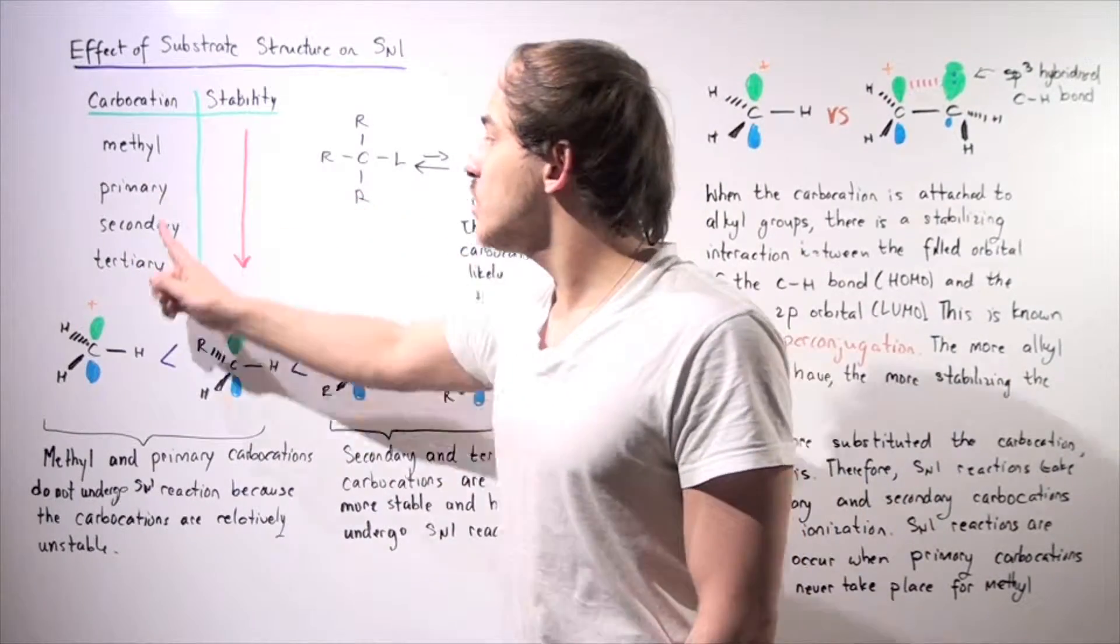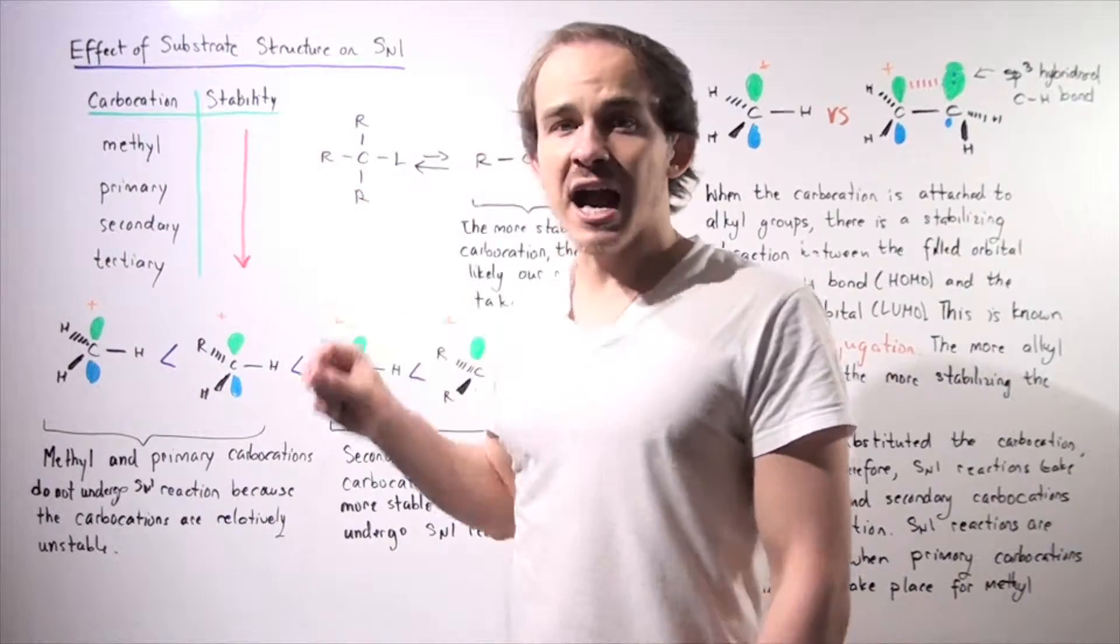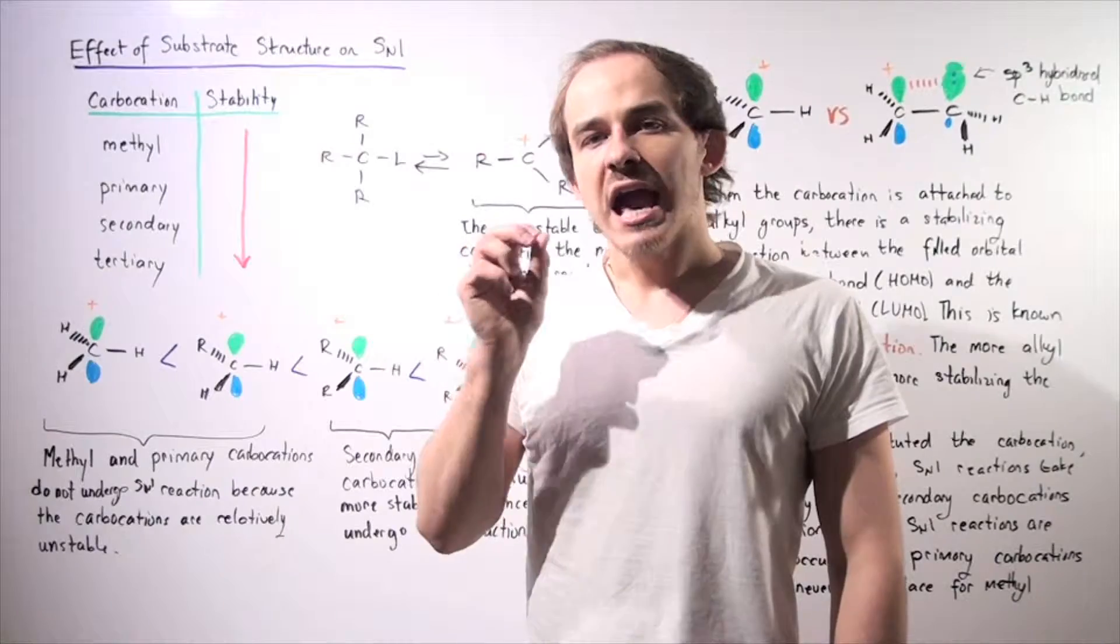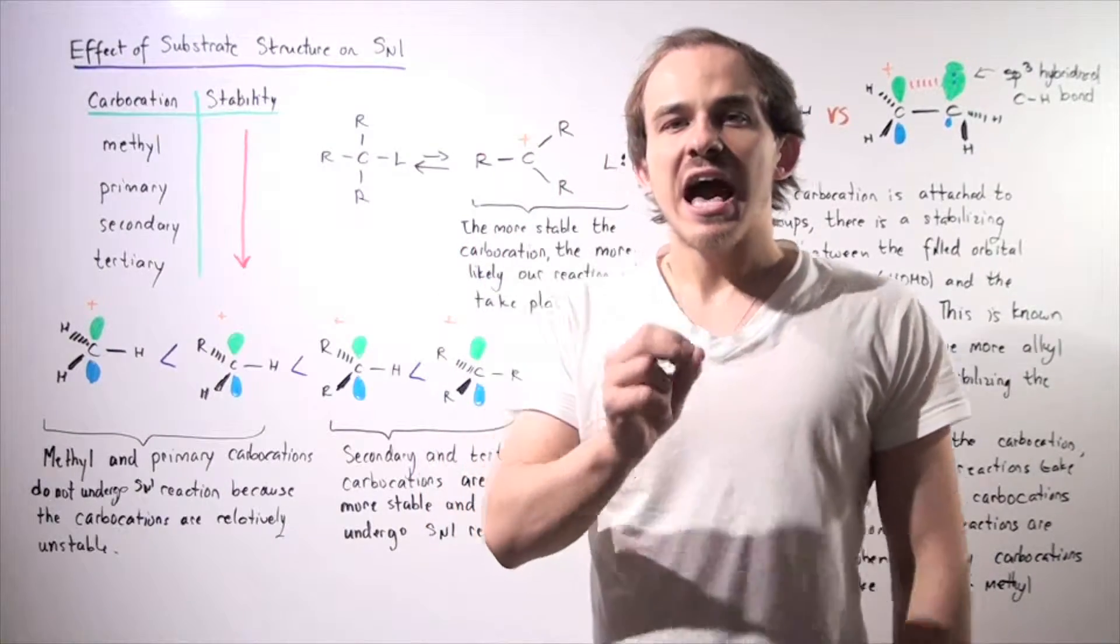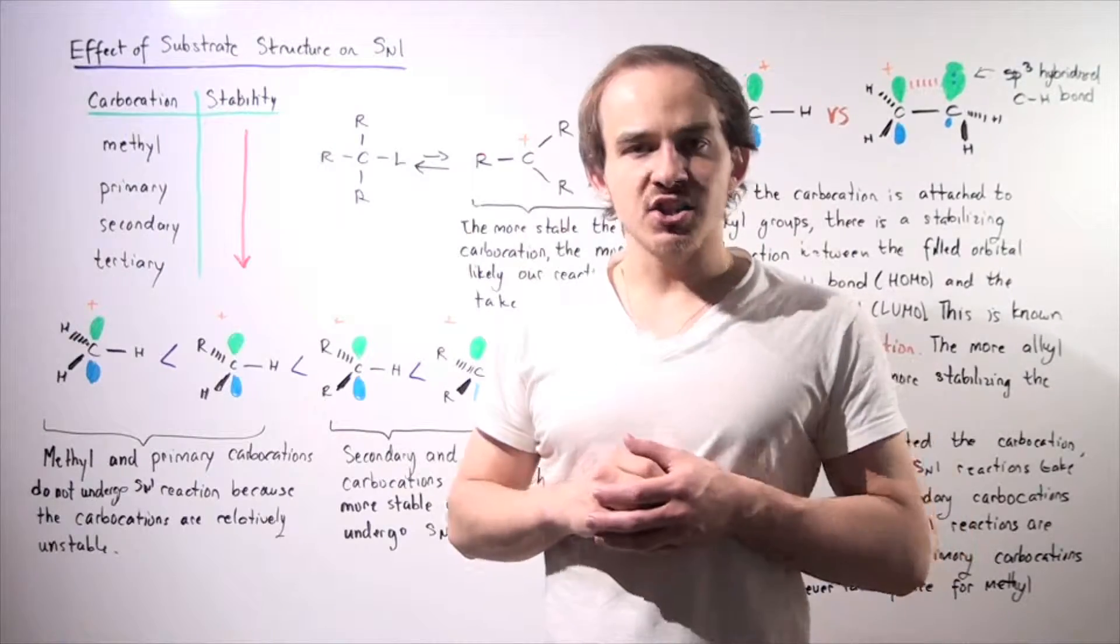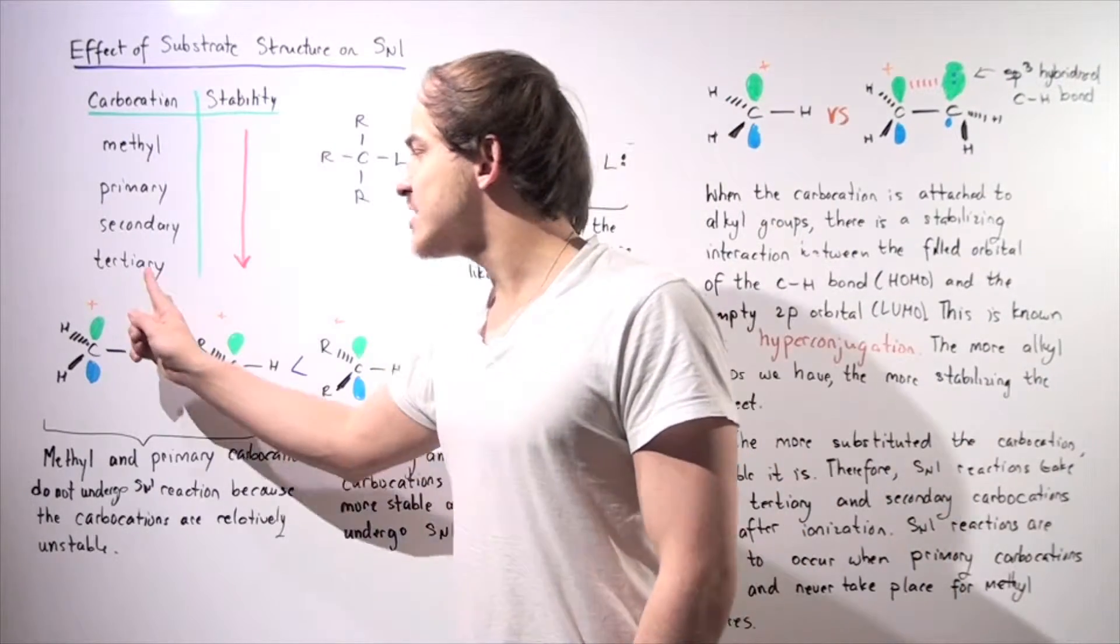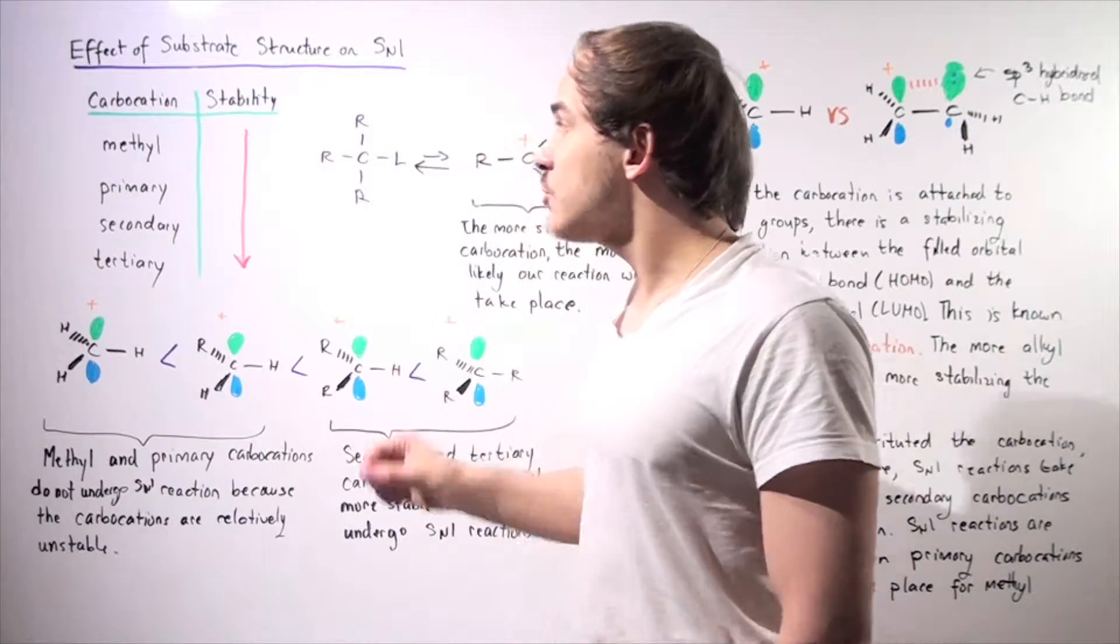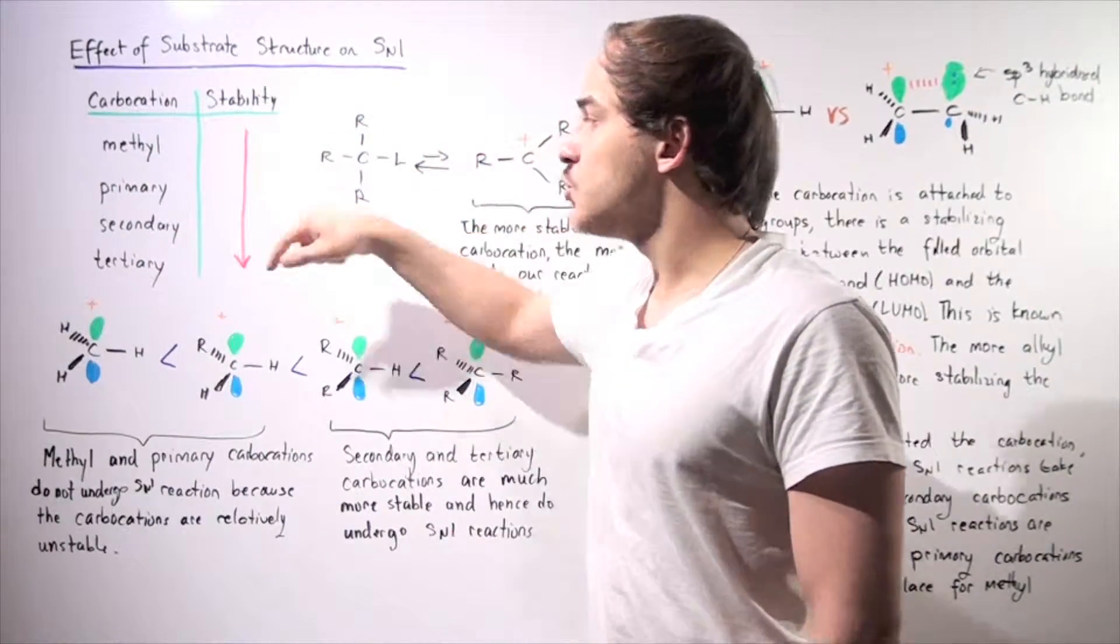In fact, as we go up from tertiary to methyl carbocations, our heat of formation becomes more positive. And recall that the more positive our heat of formation is, the more unstable our molecule is. So stability decreases as we go from tertiary to methyl and increases as we go from methyl to tertiary.